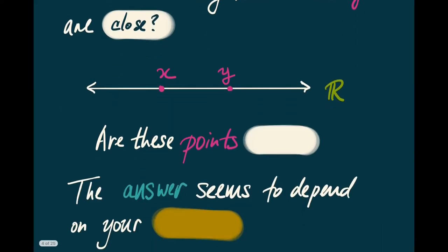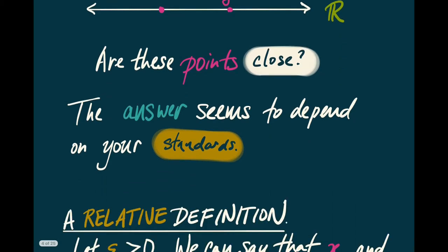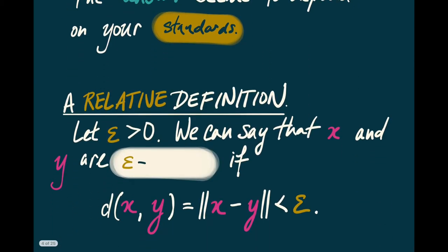Here are two points on the real line, and we can ask: are these two points close? Well, you might think those two points are close, and I might think that they're not close, and there's no real way for us to decide who's right and who's wrong. The answer depends on our standards. So our question is: if the answer depends on our standards, how do we formalize that mathematically? Well, the standard in question is an epsilon greater than zero for us.